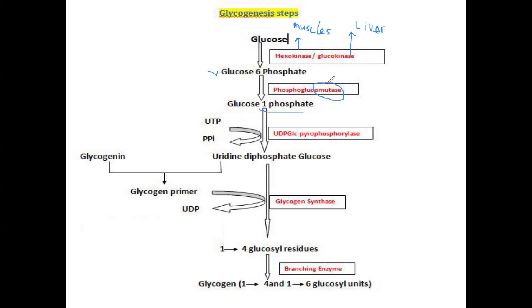The term 'mutase' means to change a position. So glucose-6-phosphate is converted into glucose-1-phosphate. The next enzyme is UDP-glucose pyrophosphorylase, which activates glucose by adding UDP to it. This produces uridine diphosphate glucose, which is the activated form of glucose.